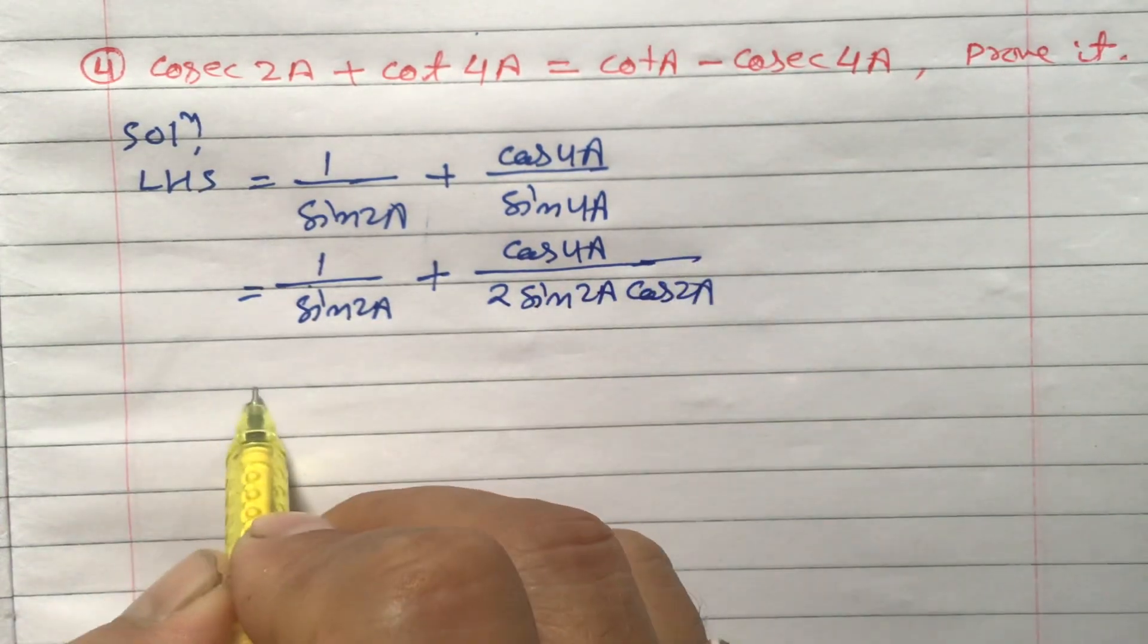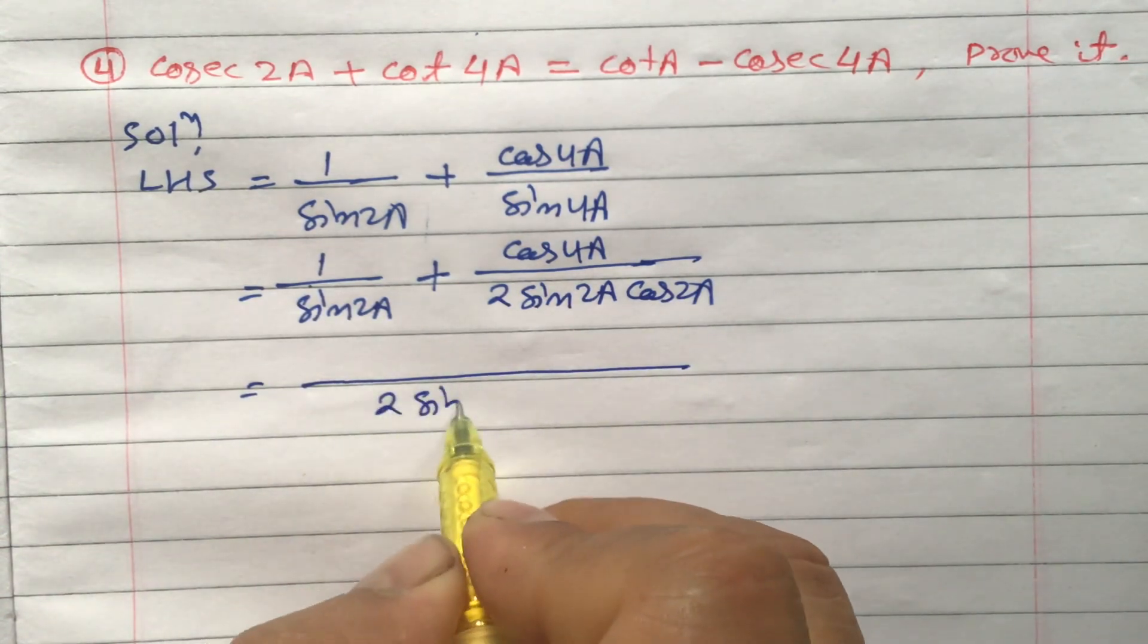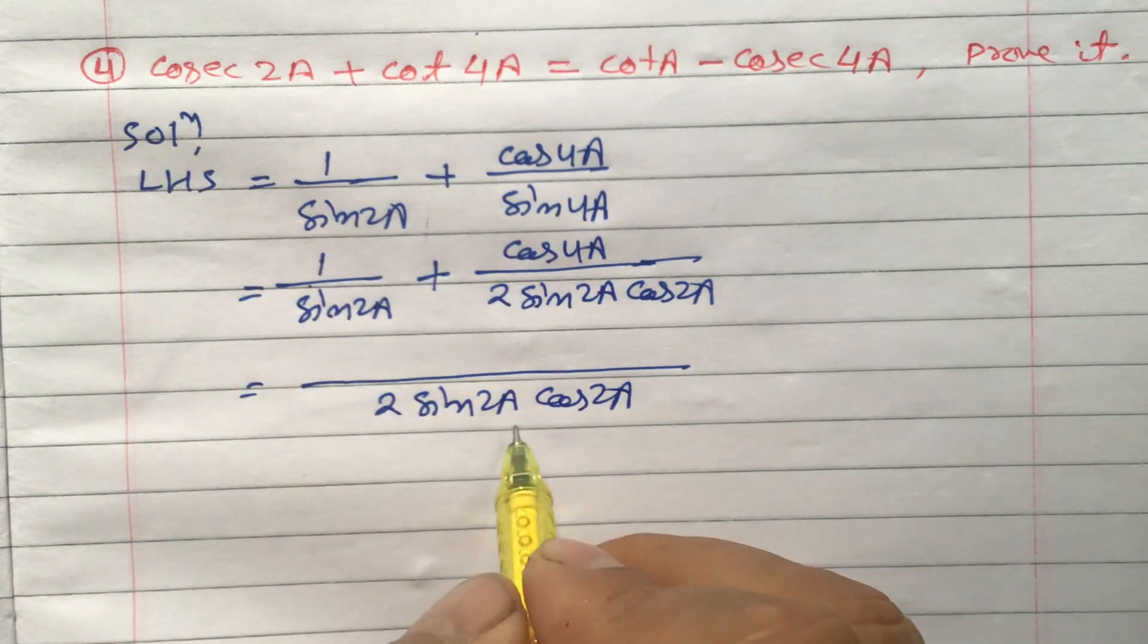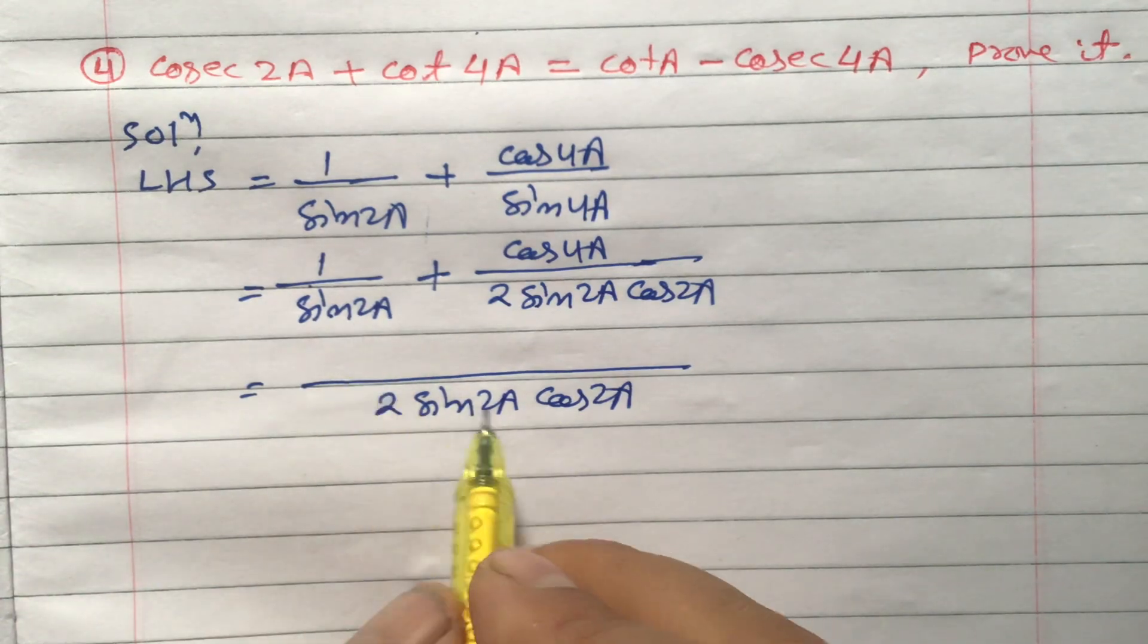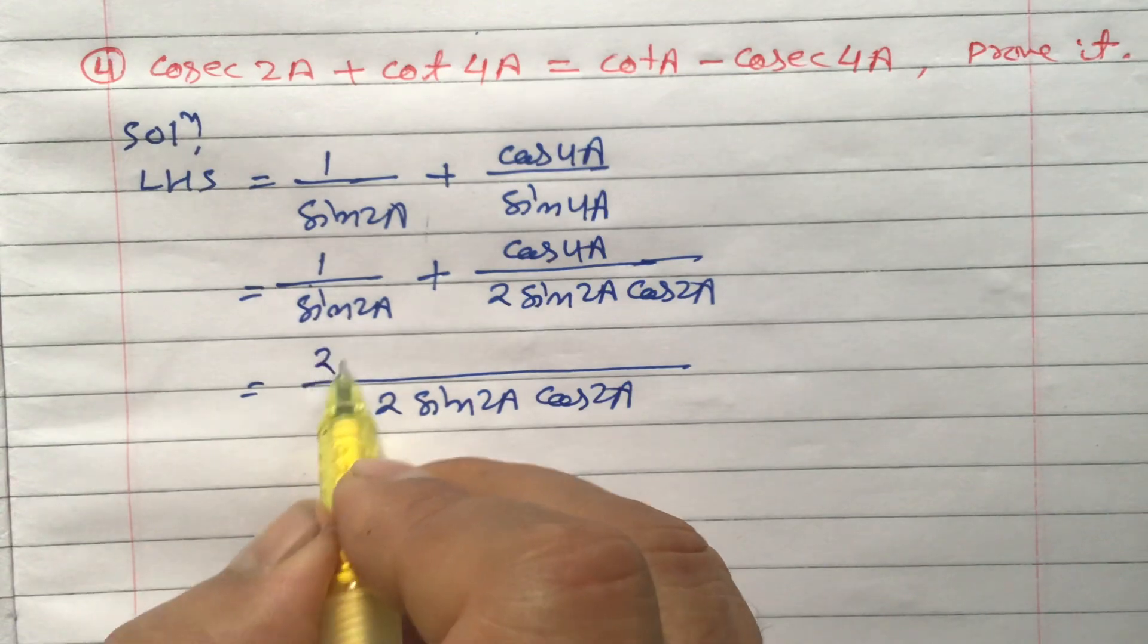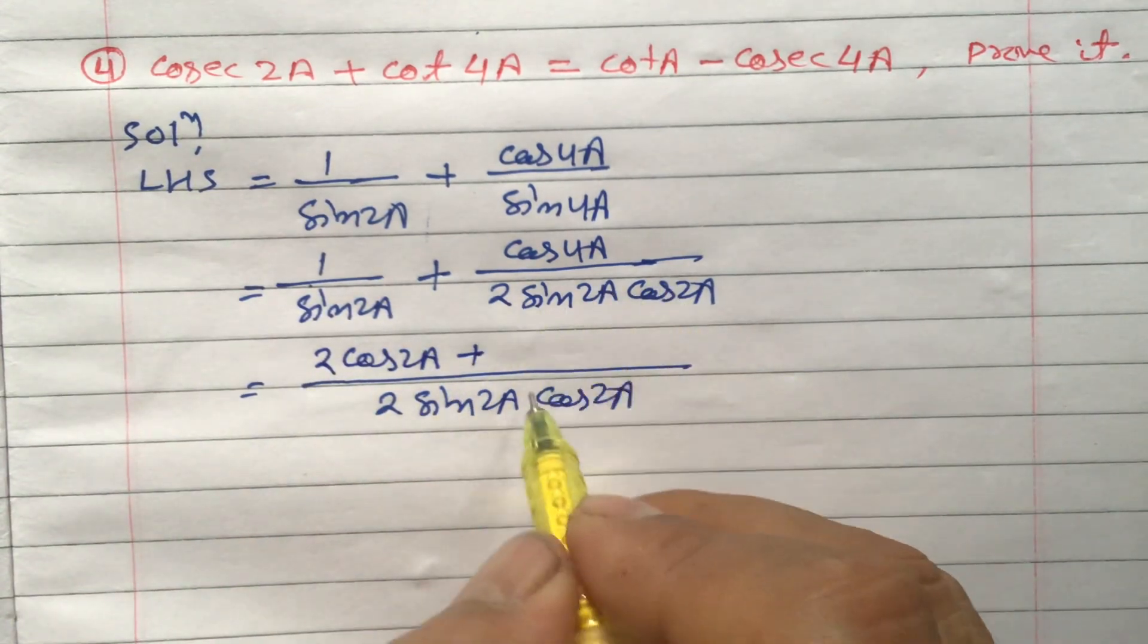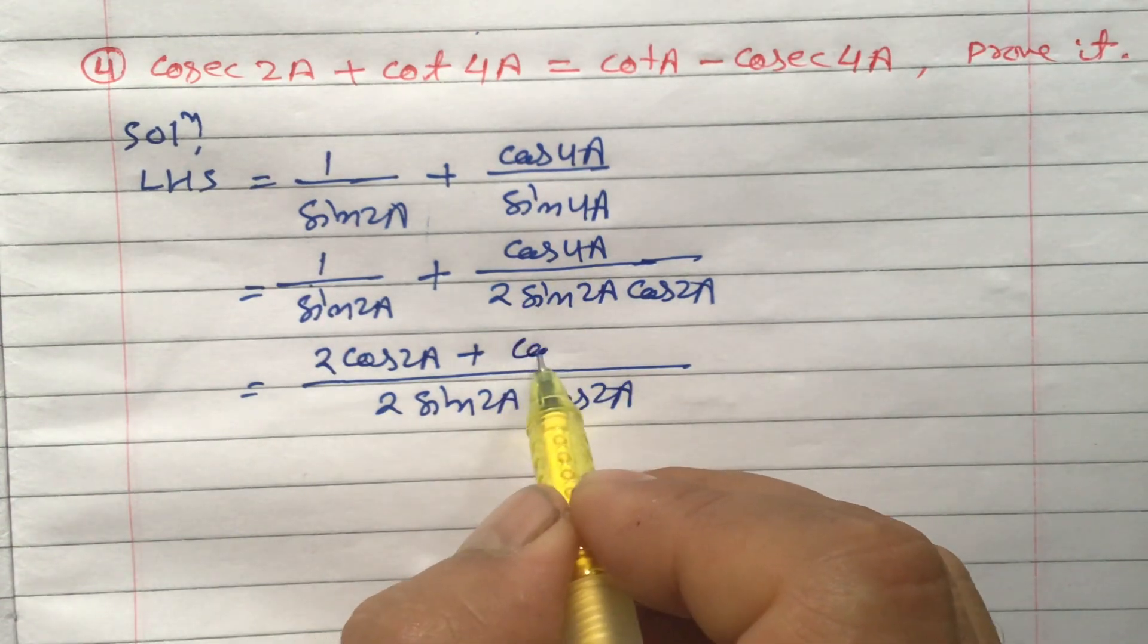Now we can take LCM. If you take LCM, 2 sine 2a cos 2a will be the denominator here. If you divide this LCM by sine 2a, 2 cos 2a will multiply here. So 2 cos 2a plus here. If you divide this and this you will get 1 times cos 4a.